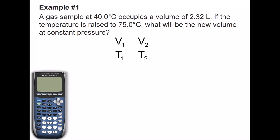Here are some examples on Charles's Law. Example number one: a gas sample at 40 degrees Celsius occupies a volume of 2.32 liters. If the temperature is raised to 75 degrees Celsius, what will be the new volume at constant pressure?